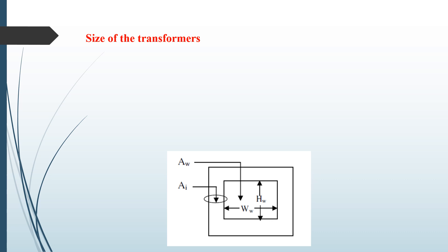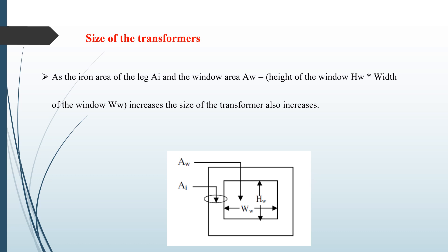The first topic is size of transformer. Size of transformer depends upon these two parameters: hw and ww, where hw is height of the window, ww is width of the window, aw is the window area, and ai is the area of the limb. As the area of limb ai and window area aw are related — aw is the product of height and width of the window — as aw increases, size of the window increases, and ultimately size of the transformer increases as the output of the transformer increases.